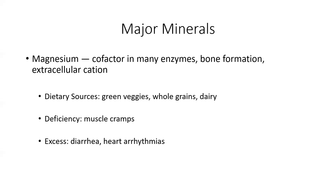Then we move on to magnesium. Magnesium is another co-factor with our enzymes. Magnesium helps us with bone formation, and it is an extracellular cation. Our dietary sources include green veggies, whole grains, as well as dairy products. Deficiencies can lead to muscle cramps, and then excess could cause diarrhea and heart arrhythmias. Neither of those are super pleasant, obviously.